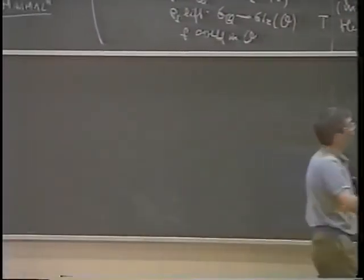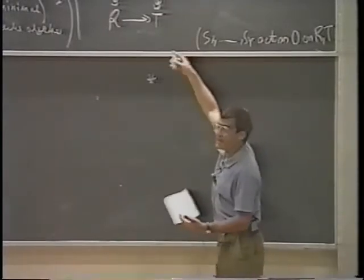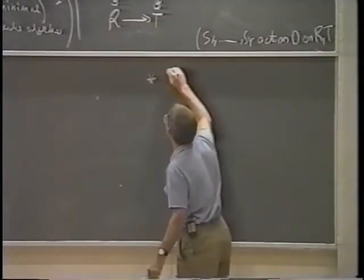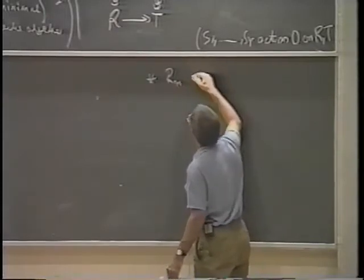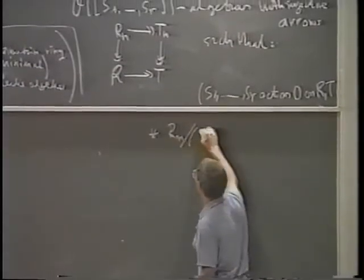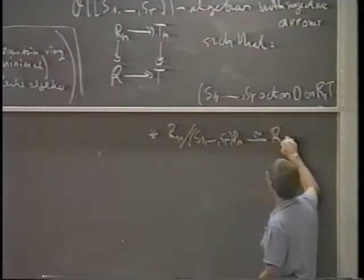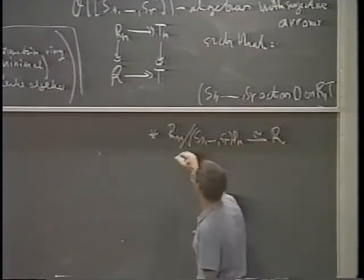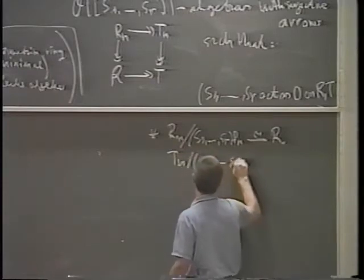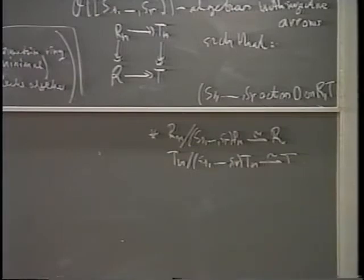There are three properties. The first property says that the rings R_n and T_n are related in a precise sense to R and T. It says that R_n maps surjectively to R, and since the action of these variables is trivial on R, the action factors through the quotient, and I want that this is an isomorphism. And it is the same for the T's — that should be the relation between the R_n's and the R's.